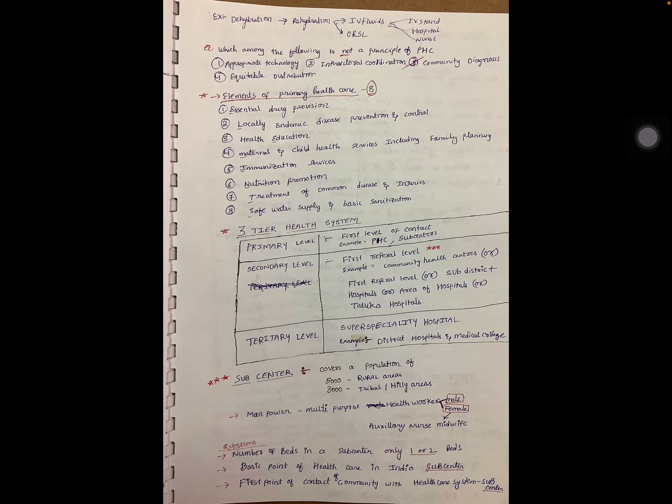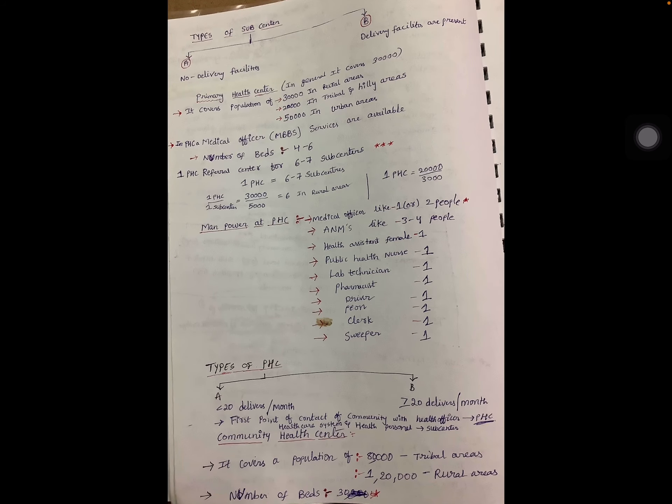A sub-center covers a population of 5000 people in rural areas and 3000 people in tribal or hill areas. The manpower at a sub-center includes multi-purpose health workers, either female or male. The female role is the Auxiliary Nurse Midwife (ANM). The number of beds in a sub-center is only one or two. The sub-center is the basic point of healthcare contact in India — it is the first point of contact of the community with the healthcare system. Sub-centers are of two types: those with no delivery facilities and those with delivery facilities.